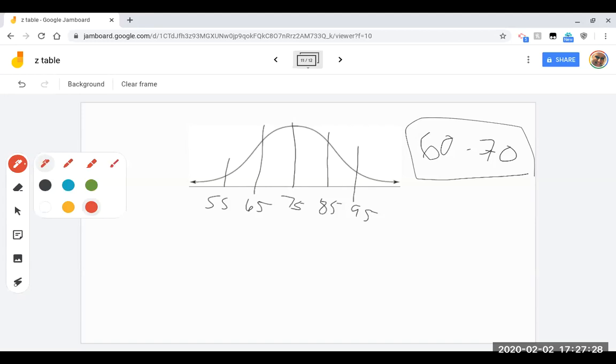Remember our first step is to draw it and calculate z-scores and look it up. So I'm going to draw it. Here's roughly 60, here's roughly 70. This is the area that I want, so I want in between 60 and 70. This looks very different than how we did it before, so we're going to have a couple extra steps.